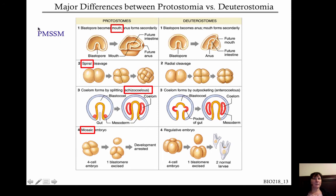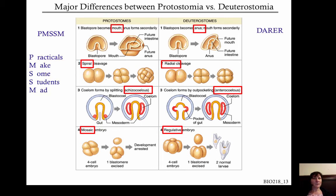Put a P in front for protostome: P-M-S-S-M. And then for deuterostome: anus, radial, enterocoely, regulative — D-A-R-E-R. Here are a couple of mnemonic devices a student came up with: 'Practicals make some students mad' and 'Do always remember extra credit.' You have to remember that in the last word, it's the R and not the C — that might stump you.